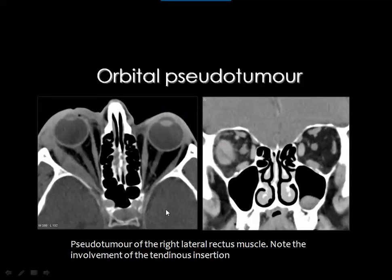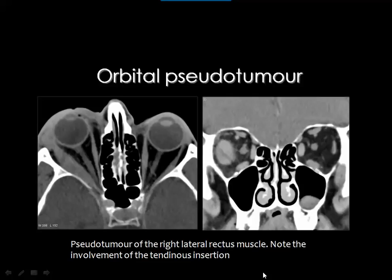An orbital pseudotumor is an inflammatory process of unknown etiology. It can affect the orbital fat, the lacrimal gland, and sometimes the extraocular muscles. The result is a smudged or dirty appearance of the intraorbital fat due to congestion and inflammation. You also get swelling of the lacrimal gland and one or more extraocular muscles, particularly the lateral rectus muscle.